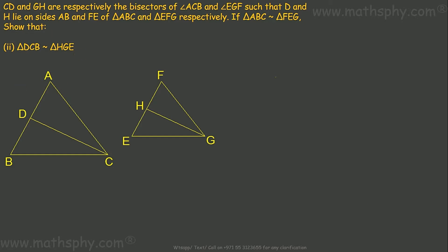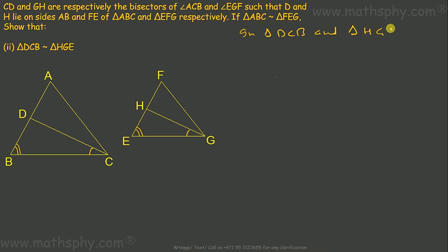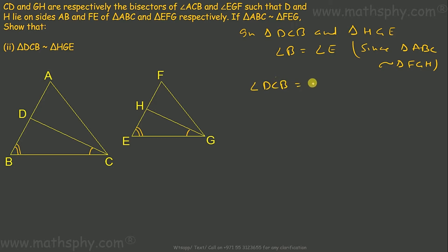Next, we have to prove triangle DCB is similar to triangle HGE. Since triangles ABC and FEG are similar, angle B equals angle E. And angle DCB equals angle HGE as corresponding angles from the similar triangles.